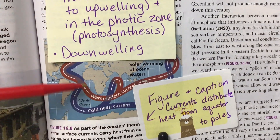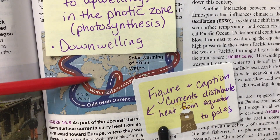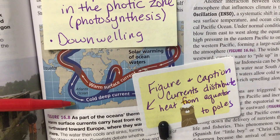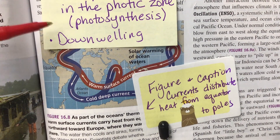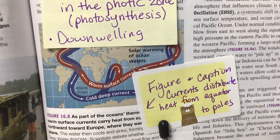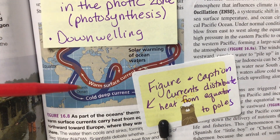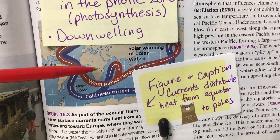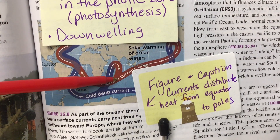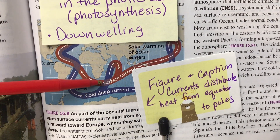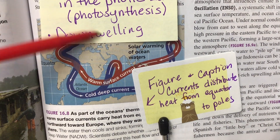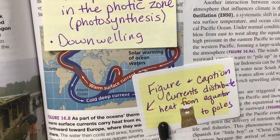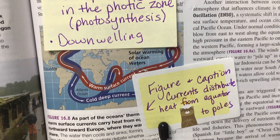The deep water currents are called thermohaline. This is why up in London or Canada, people can still live — it's habitable. The currents in the ocean take heated water from the equator and transport it to super cold areas, warming those areas up a little bit to make them habitable.